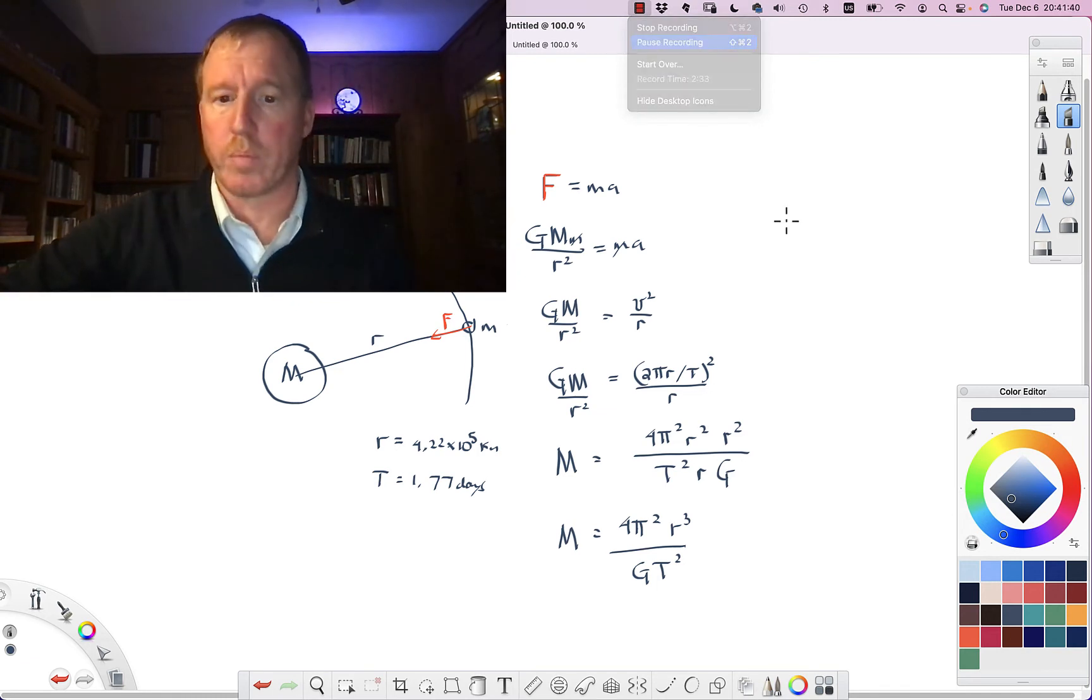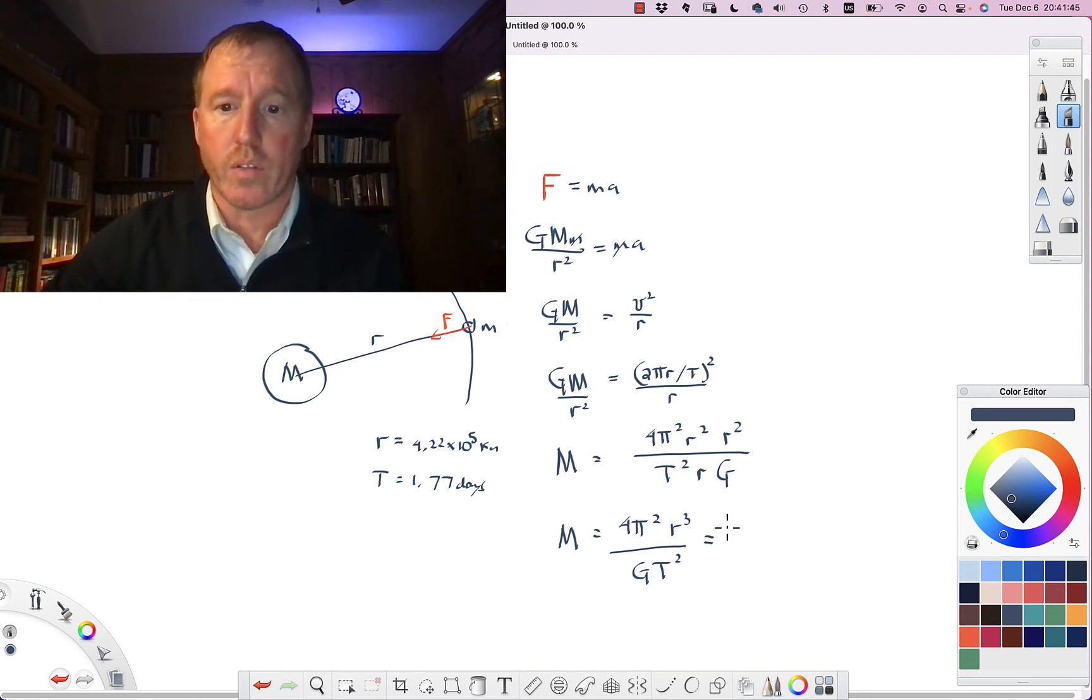Okay, I've plugged in some numbers, and when I plug them in, I get that the mass of Jupiter is 1.9 times 10 to the 27th kilograms.